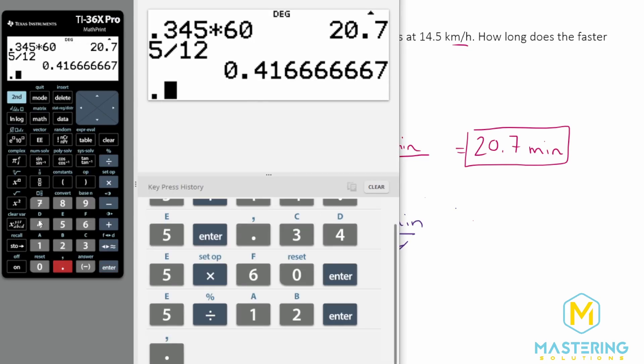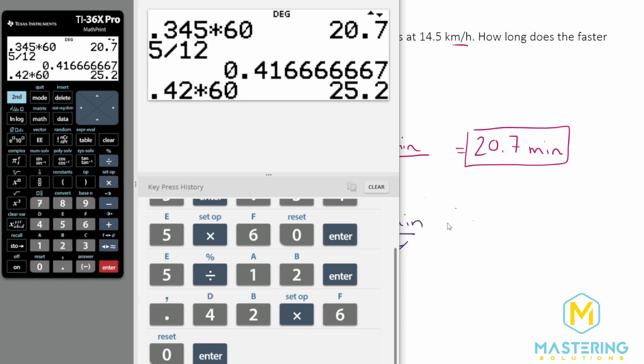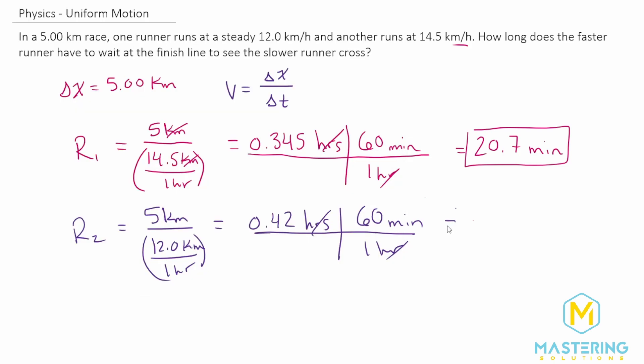So 0.42 times it by 60 gives us 25.2. So we'll round that to just 25 minutes.